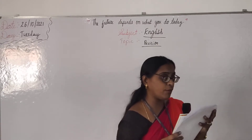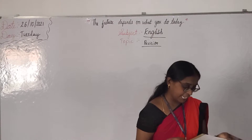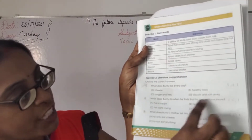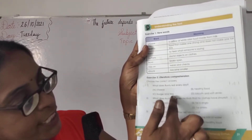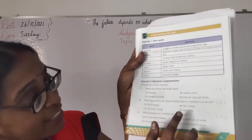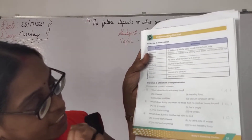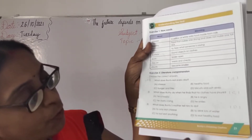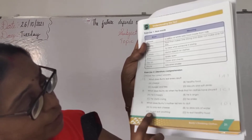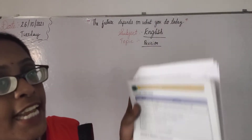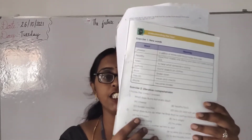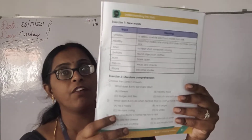What does Bundy do when he finds that his clothes have shrunk? He starts crying. Then what does Bundy's mother tell him to do? She tells him to eat healthy food — not only cheese, not to drink only water, but to eat healthy food. This is from Exercise 2, literature comprehension. This will definitely come for the FA2. Please read and practice.